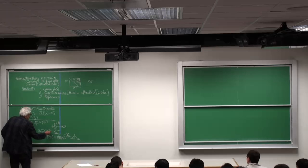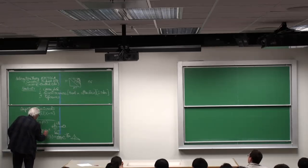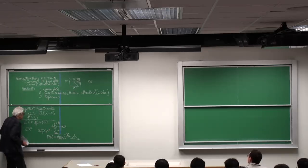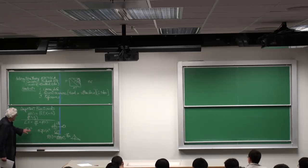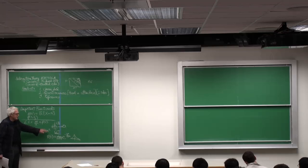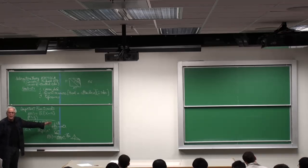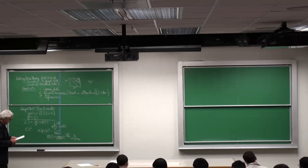And sigma squared, of course, would be this, but I didn't want to write it because sigma squared is the variance, not the second moment. It's only the second moment when the mean is zero. All right, good.